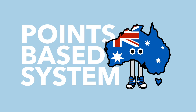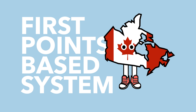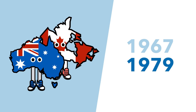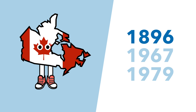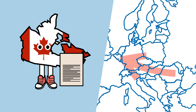The Australian system, by the way, should actually be called the Canadian system. Canada was the first country to implement a points based system way back in 1967, and Australia only got on the bandwagon in 1979. In fact, way back in 1896, Clifford Sifton, the Canadian interior minister, aggressively recruited migrants from Eastern Europe to help the spluttering Canadian economy — one of the first modern economically selective migration policies.